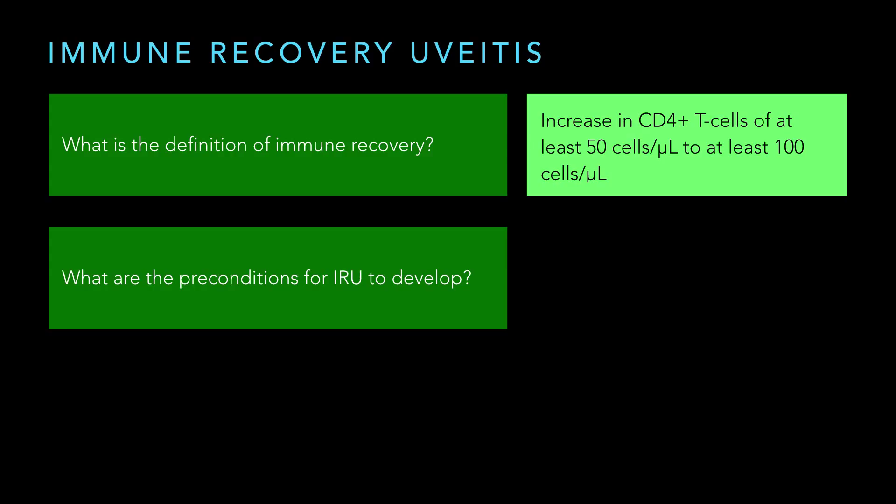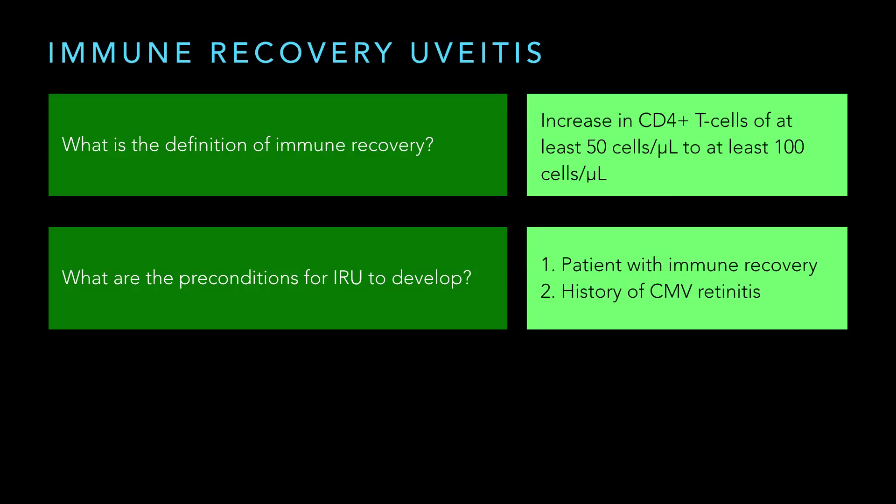So what are the preconditions? Can anybody get immune recovery uveitis? It's a very specific term — really for AIDS, though it could apply to a few other things. They had to increase their cells by at least 50 and get up to at least 100. What else would you look for in a patient's history? Do they need to have a history of another infection before they can get to IRU? Yes — and that infection is CMV retinitis. So basically, immune recovery plus a history of CMV retinitis is where we're concerned. If they had toxoplasmosis or HIV retinopathy and had immune recovery, that wouldn't necessarily mean they're going to get IRU.